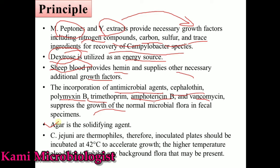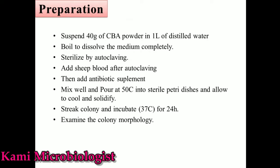Remember, Campylobacter is actually a thermophile, so when we want to grow it we must incubate it at a temperature of 42 degrees Celsius. Due to this high temperature, other normal flora bacteria will be killed. This makes the medium highly specific, allowing only Campylobacter bacteria such as Campylobacter jejuni to grow easily.